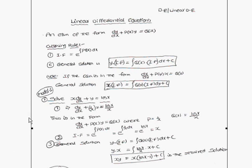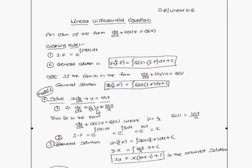Let us observe Model 1. The equation given is x times dy/dx plus y equals log x. The first step is to convert the given equation into the standard form dy/dx plus P(x)·y equals Q(x). Multiplying the entire equation by 1/x, we get it in standard form, where P(x) is 1/x and Q(x) is log x divided by x.